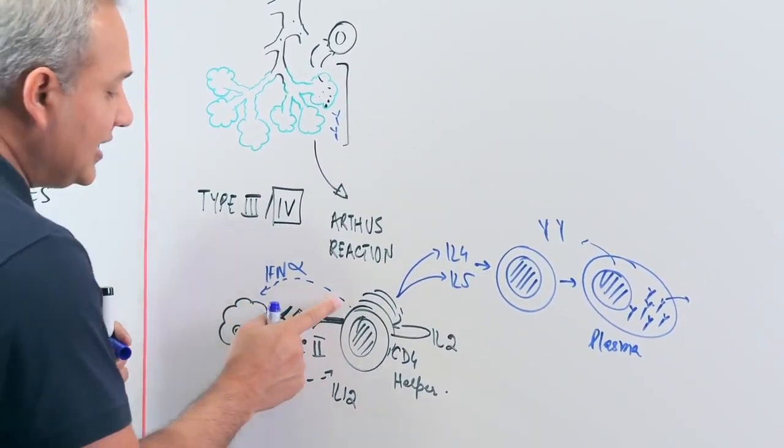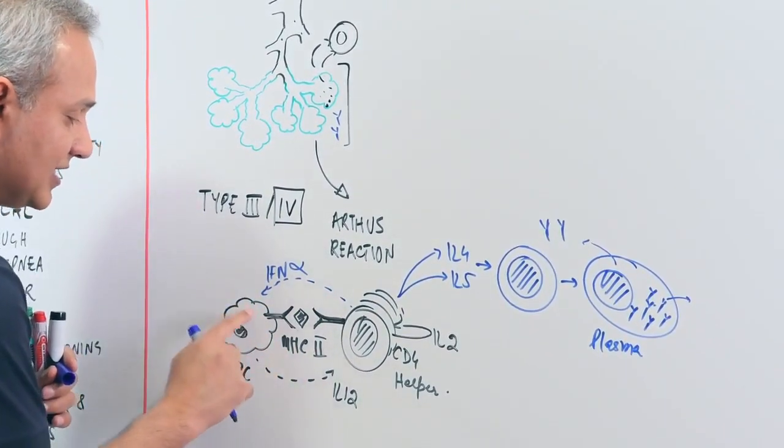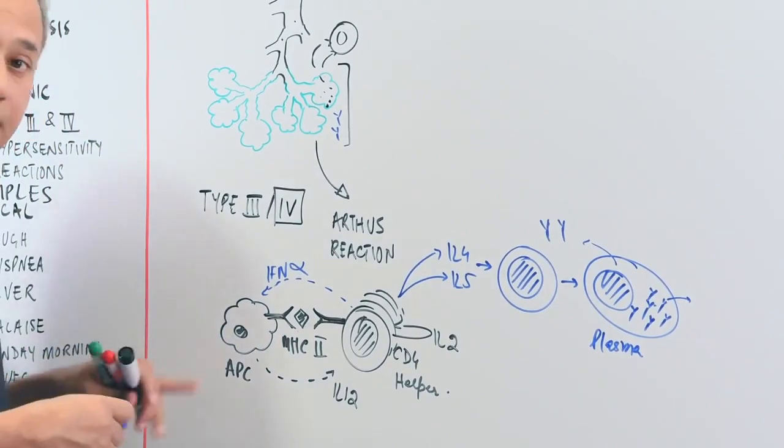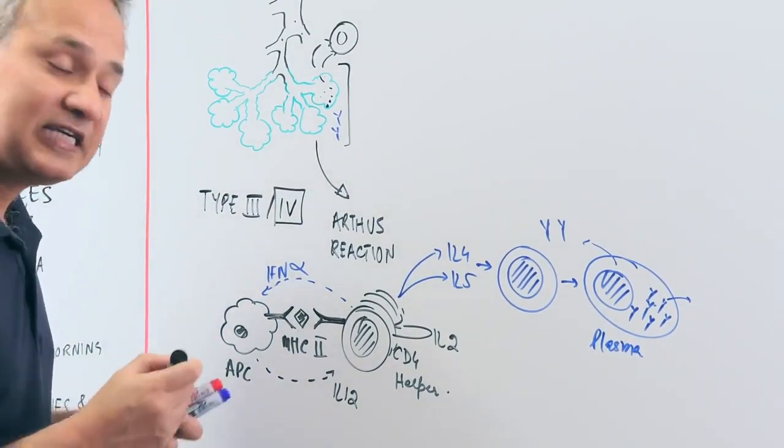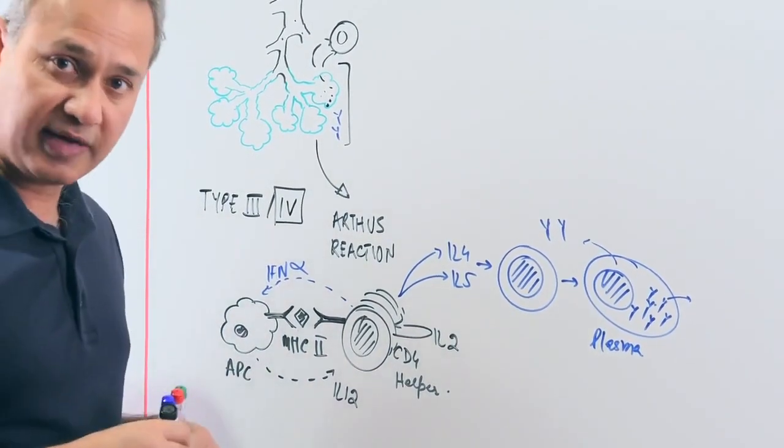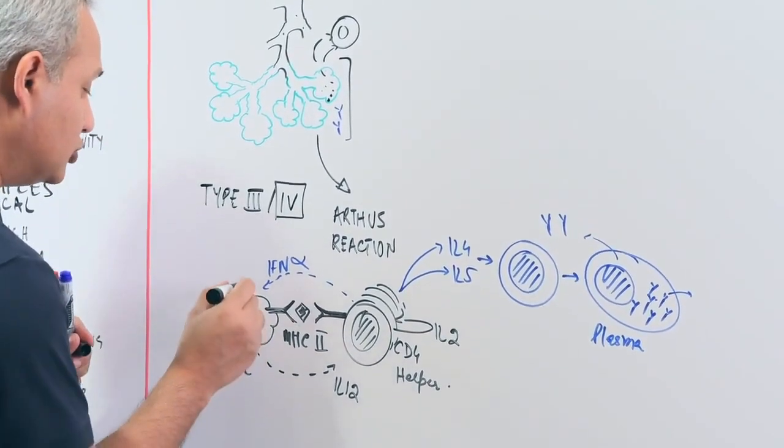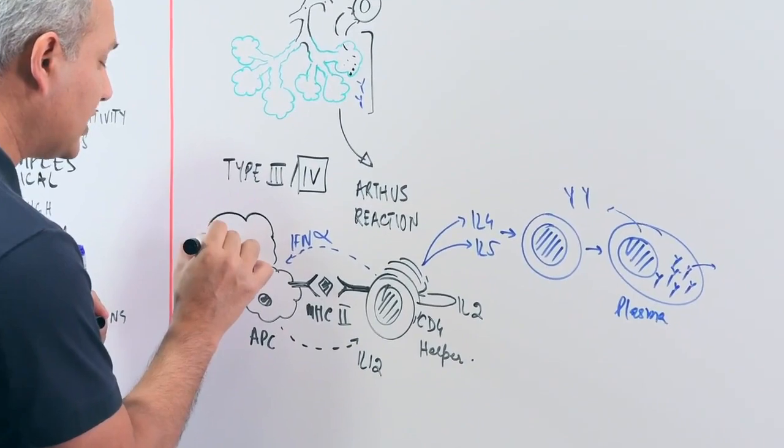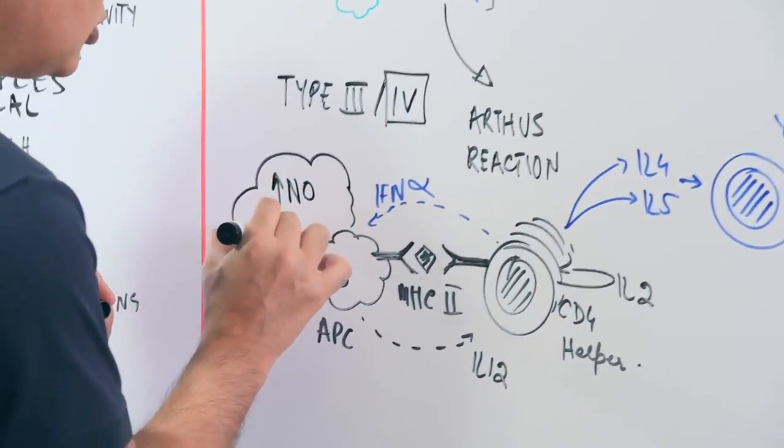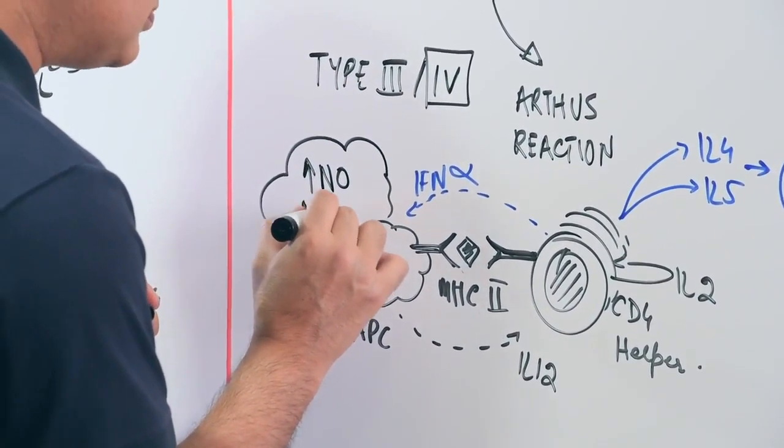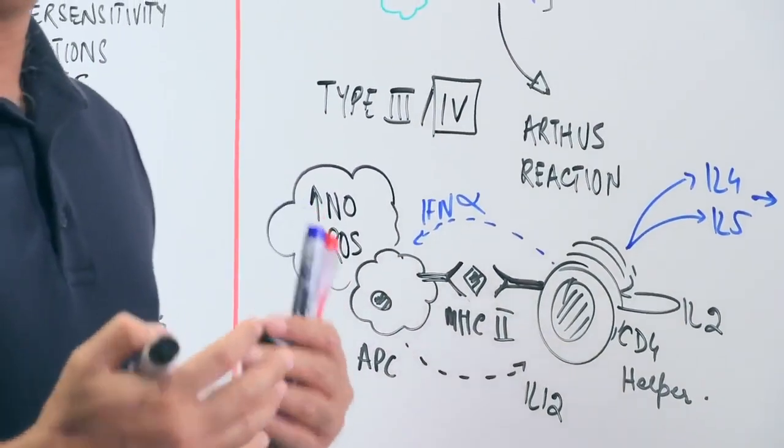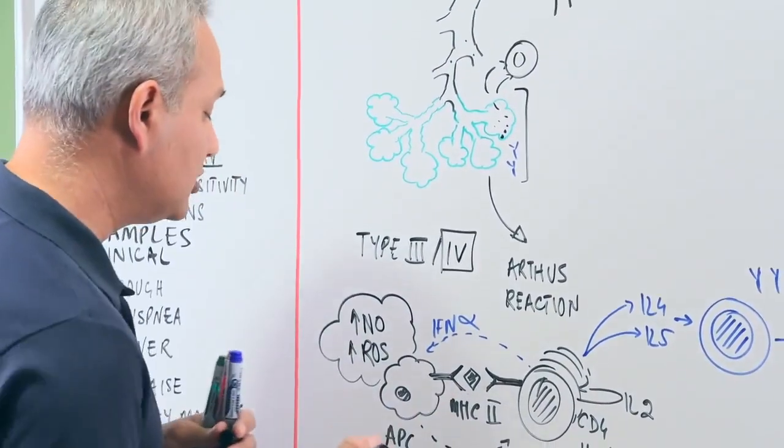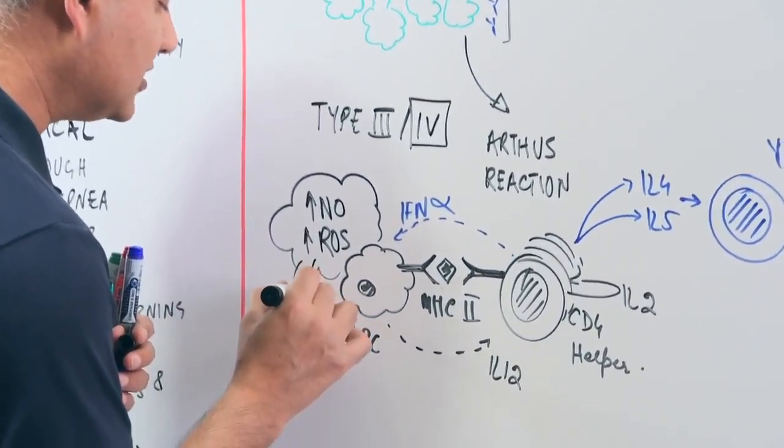Second is the interferon gamma. When the interferon gamma is released, that activates the macrophages. Now an active macrophage is a dangerous macrophage. What does that dangerous dude do? So if this was the active macrophage, it produces more nitric oxide, it produces more reactive oxygen species, it does more killing. Plus, in addition to the killing, it of course releases